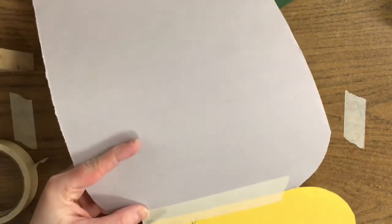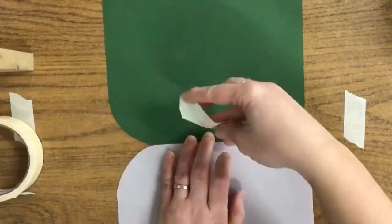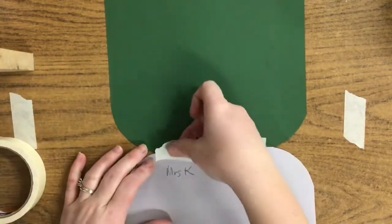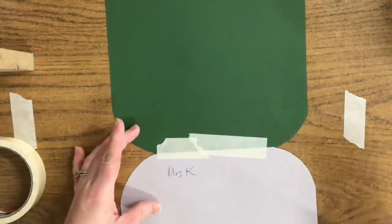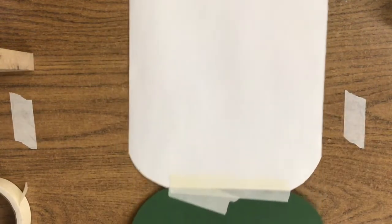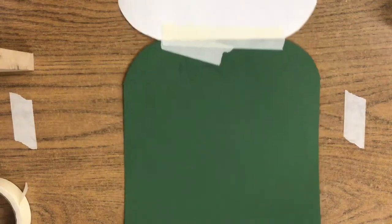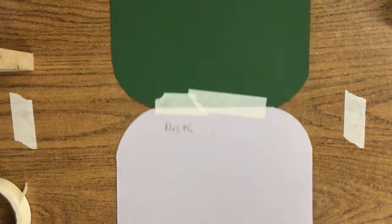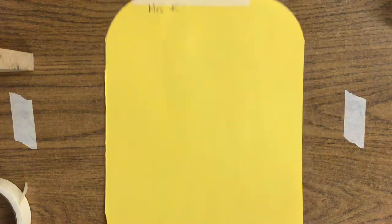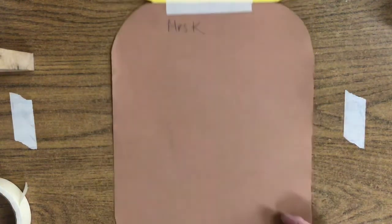If you do happen to get a little tape run over, make sure you trim that up. This is what the back side of your totem pole should look like. Each piece has my name on it, and each piece is taped together with no gap at the end.